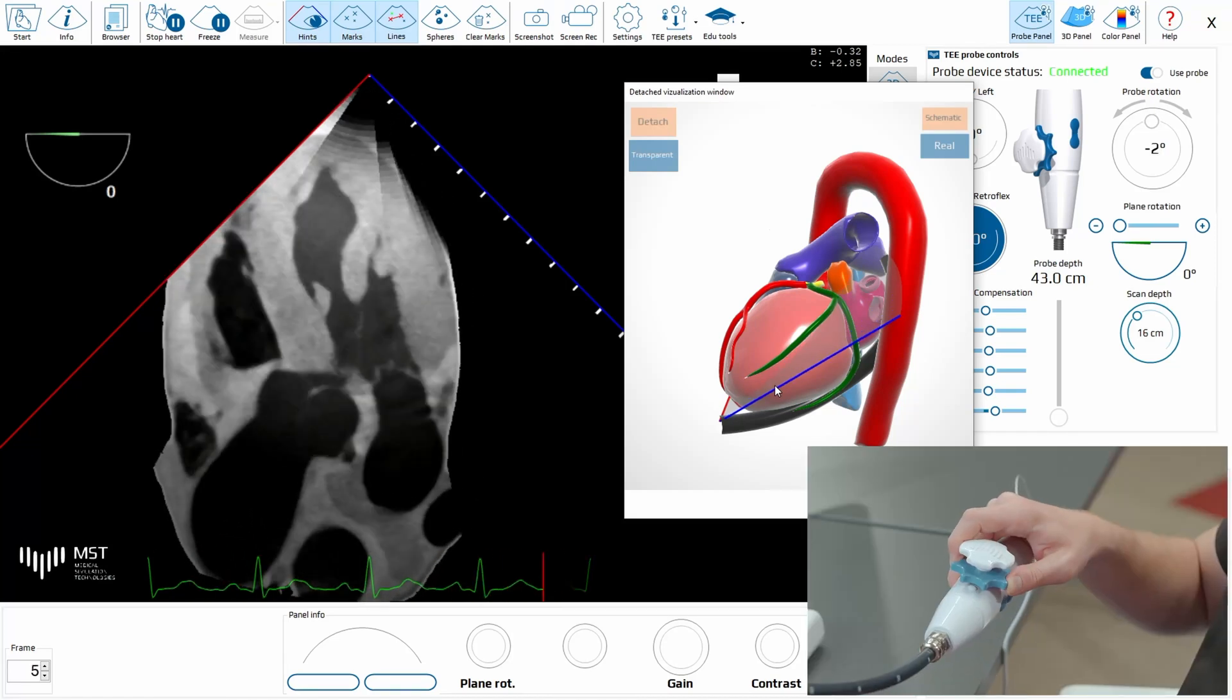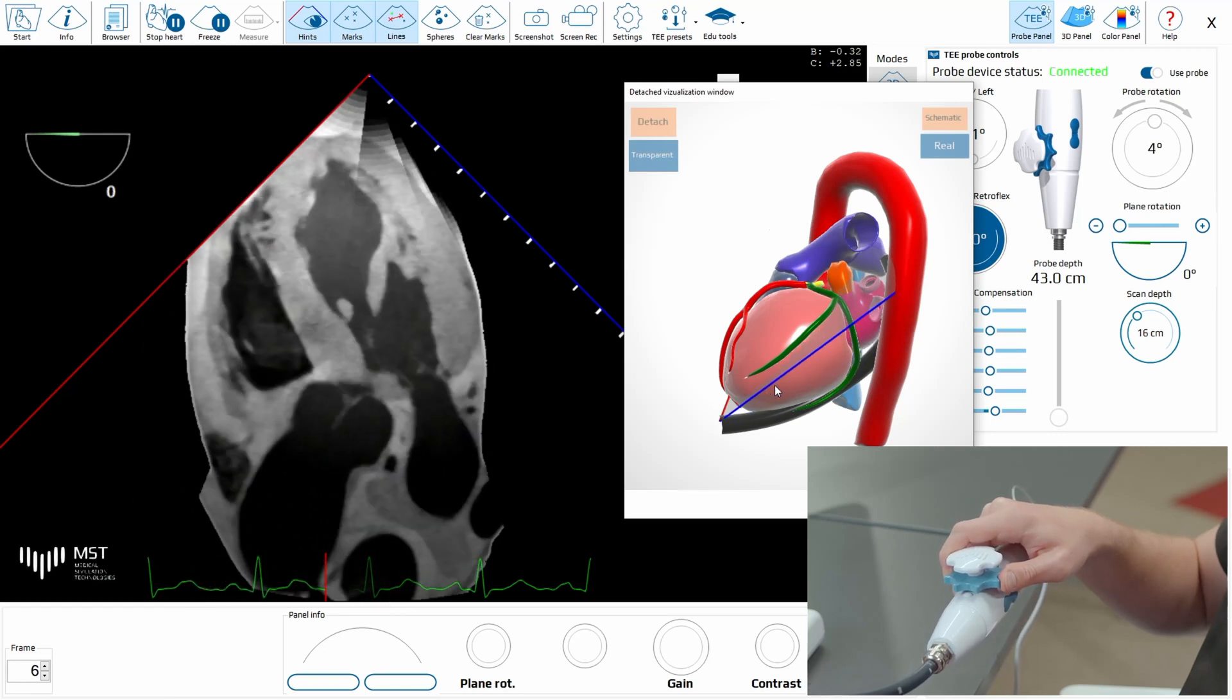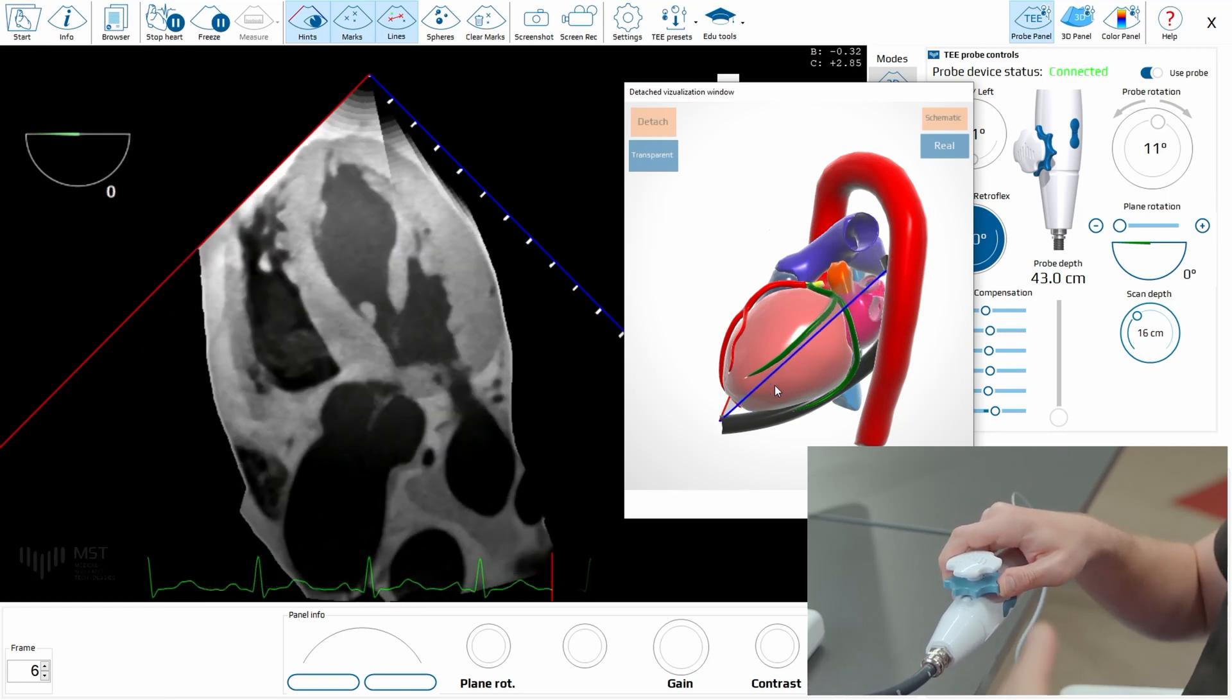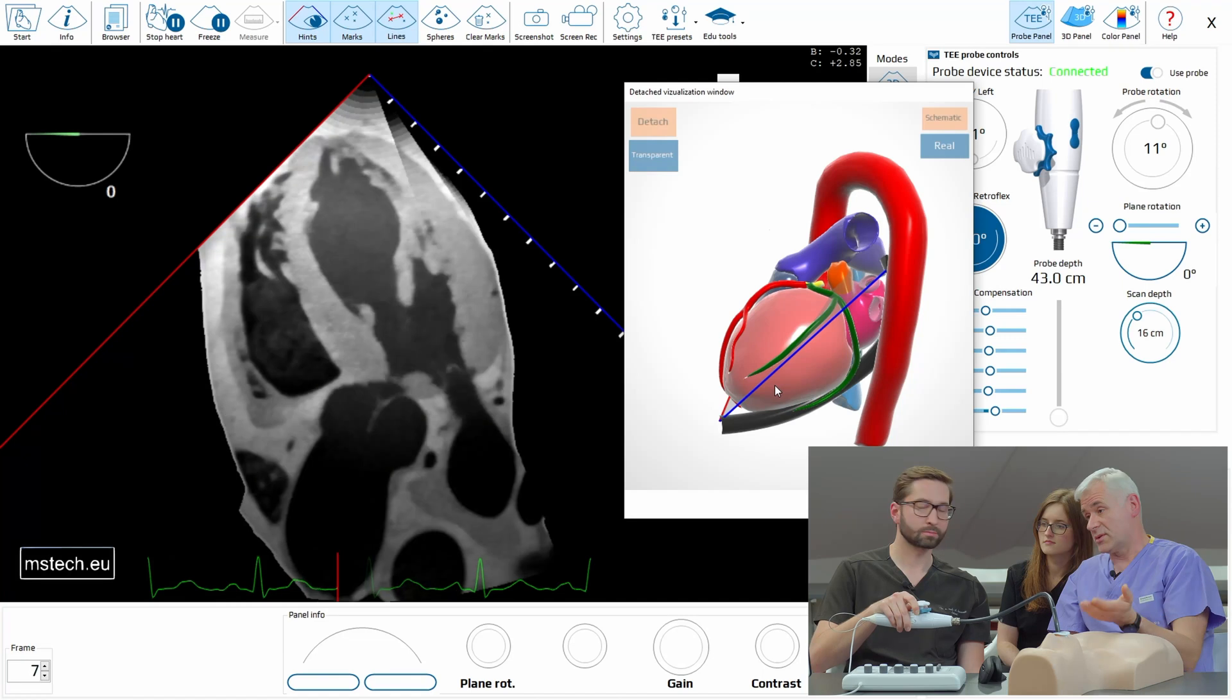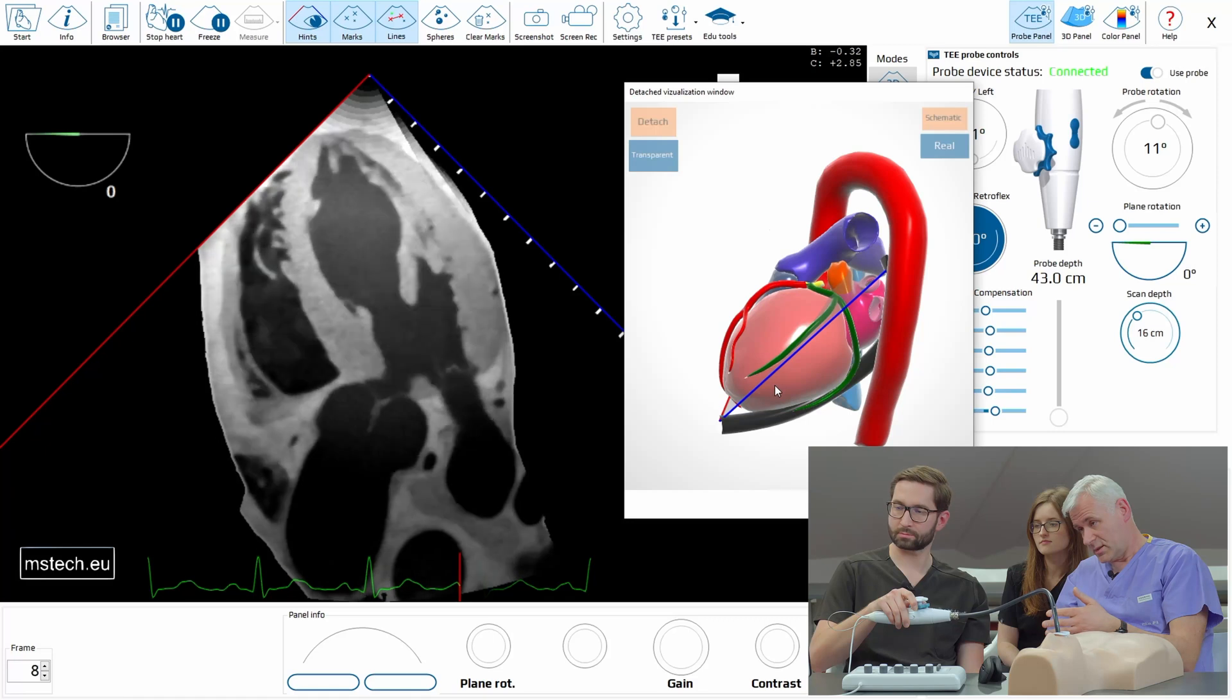So more or less you are there. Of course there are many other views. There are views on the pulmonary veins. There are views on the tricuspid valve which are not so easy for the beginner. We can do it later.